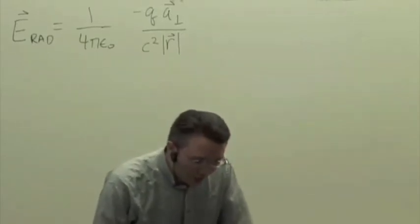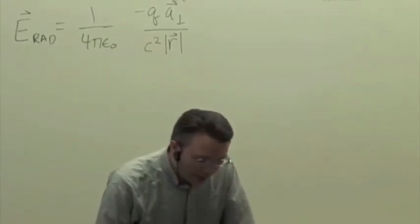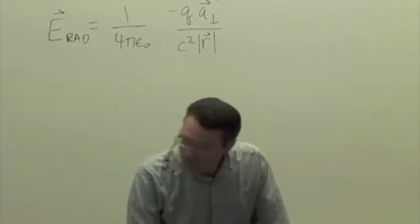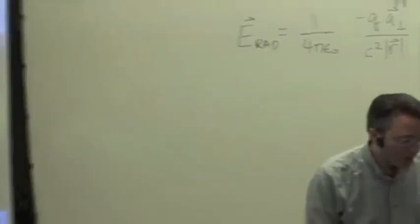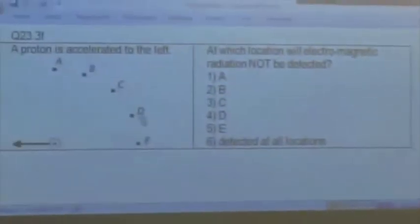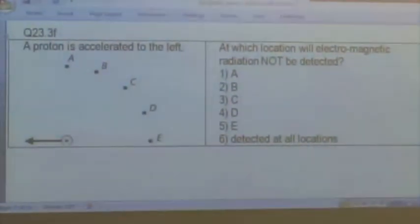So why don't we start with just a quick review of this and see if we can get some of these directions correct. So here's a question: we have a proton that is accelerated to the left and we have various locations A, B, C, D and E. At which location will electromagnetic radiation not be detected?